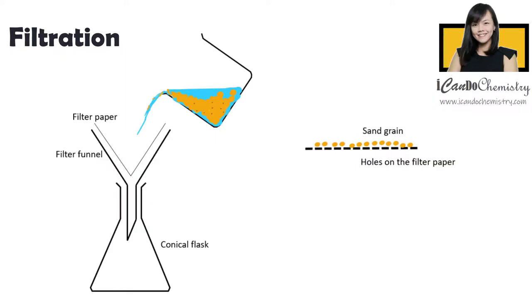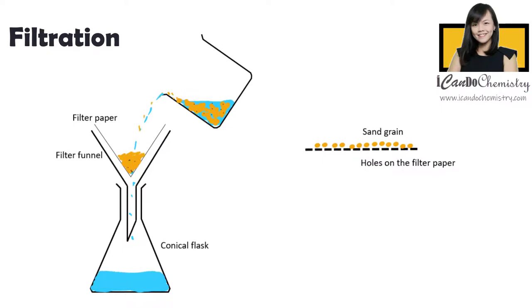We will pour the mixture through the filter paper. Now the filter paper acts as a sieve. There are small pores on the filter paper. Now the size is so small, only water can pass through. The solid particles that are bigger than the pores of the filter paper will not be able to do so. Pour the mixture into the filter paper. You will realize sand will remain in the filter paper. Water will flow through into the conical flask.